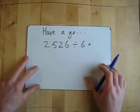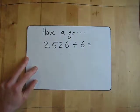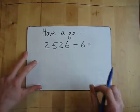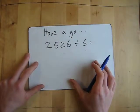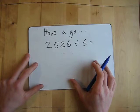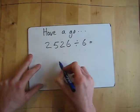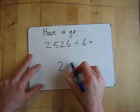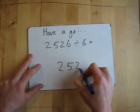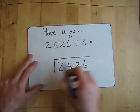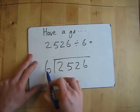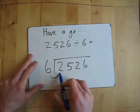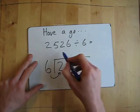Let's have a go at this one. It's 2,526 divided by 6 — pause it, have a little go. I'm going to go through the answer in 3, 2, 1. So 2,526 underneath the bus stop, put the 6 at the front. How many times does 6 fit into 2? It doesn't fit in.